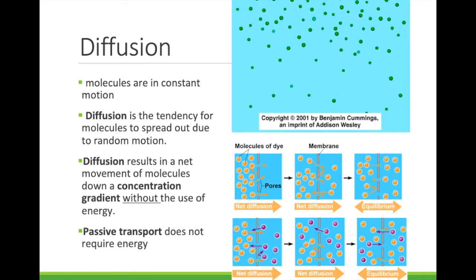Eventually, the concentration of solute will be the same on both sides of the membrane. This is called equilibrium. This does not mean that the molecules stop moving, only that they move both ways at the same speed, and so the relative concentrations stay the same.